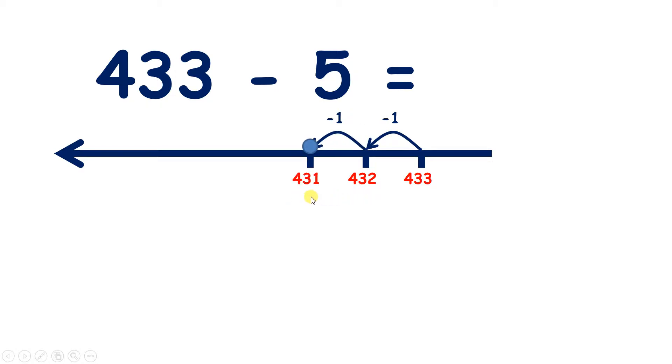431, 430, 429, 428. So 433 subtract 5 equals 428.